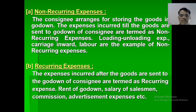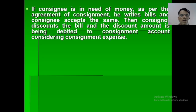Recurring expenses: the expenses incurred after the goods are sent to the go-down of the consignee are recurring expenses. Examples include rent of go-down, salary of salesman, commission, advertisement expenses, etc.